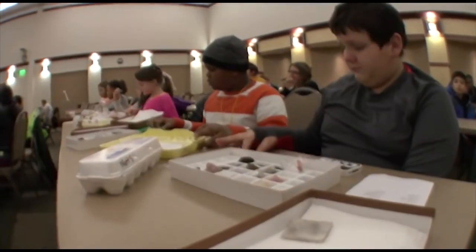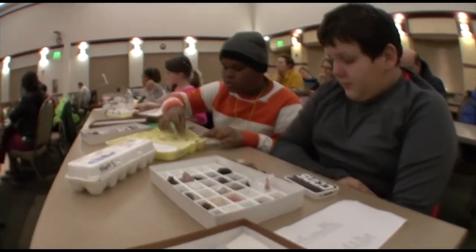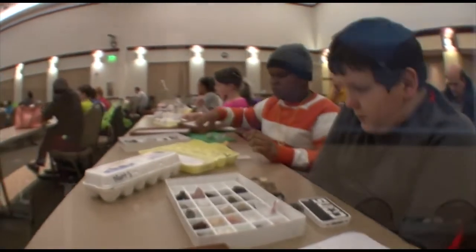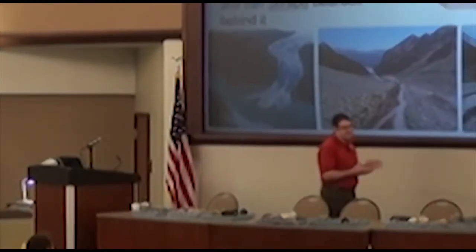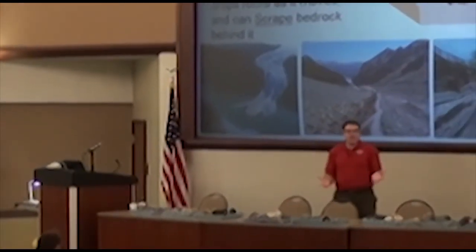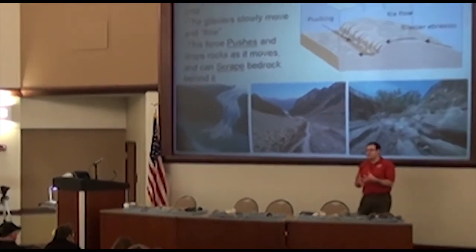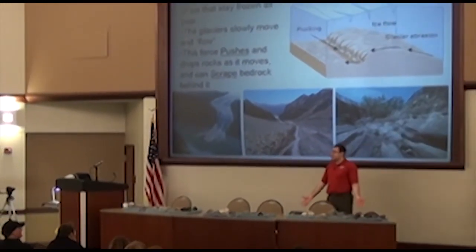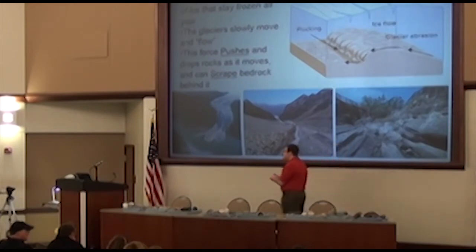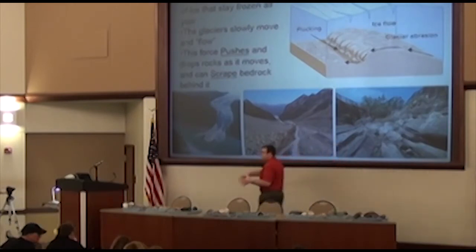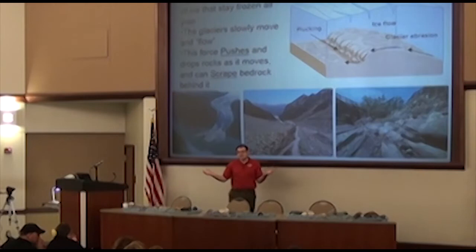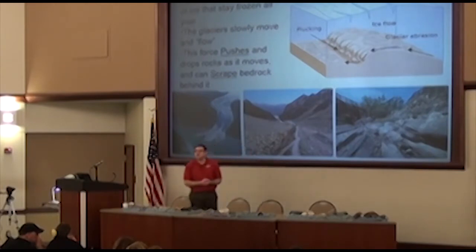The next type of erosion we're going to talk about is the action of glaciers. Glaciers did some really cool things, and in Michigan we can actually see a lot of their effects — we had glaciers here. A glacier is a big ice sheet; they were and still are these big pieces of ice.